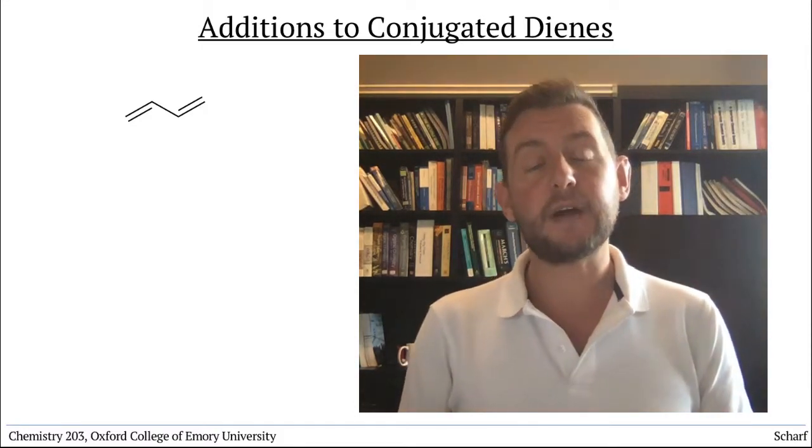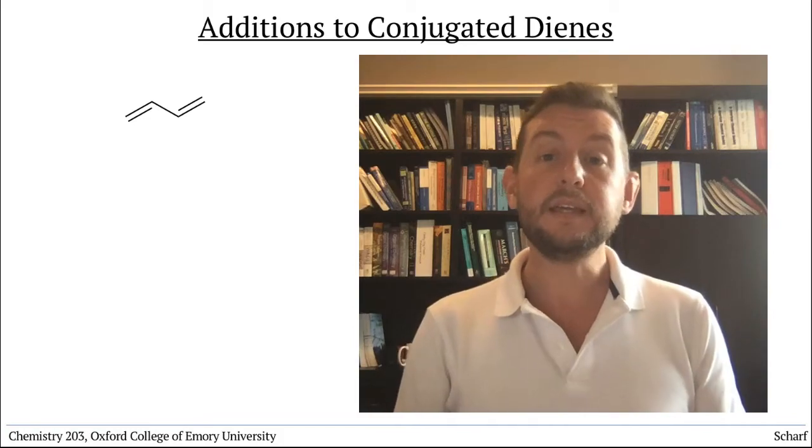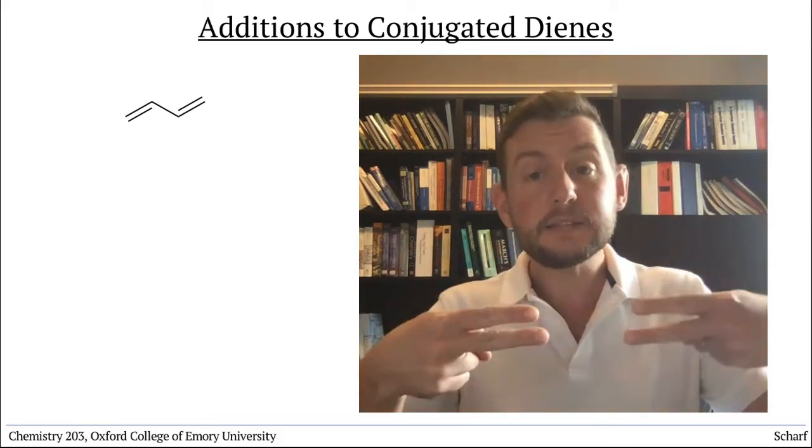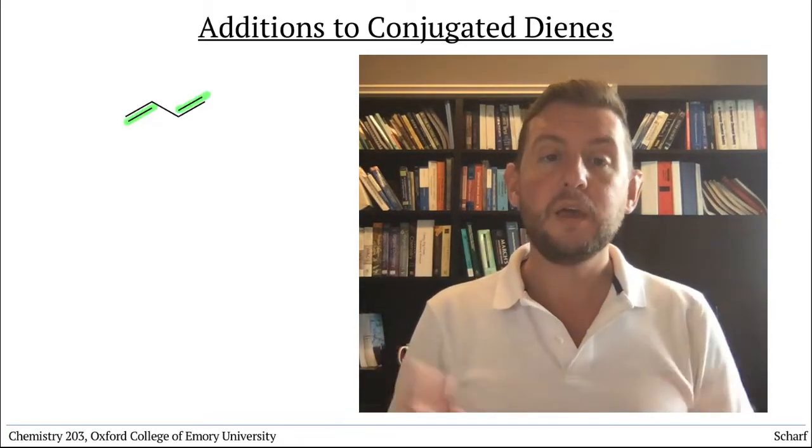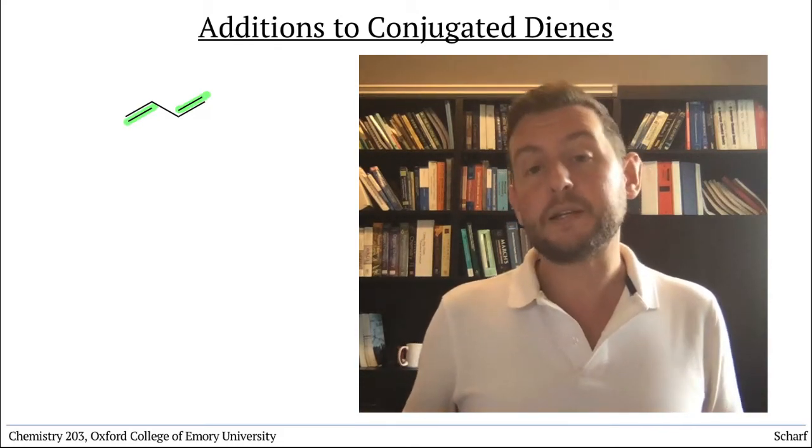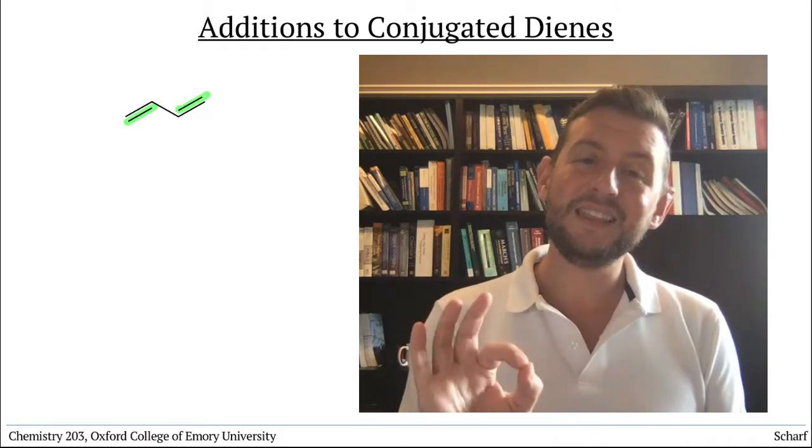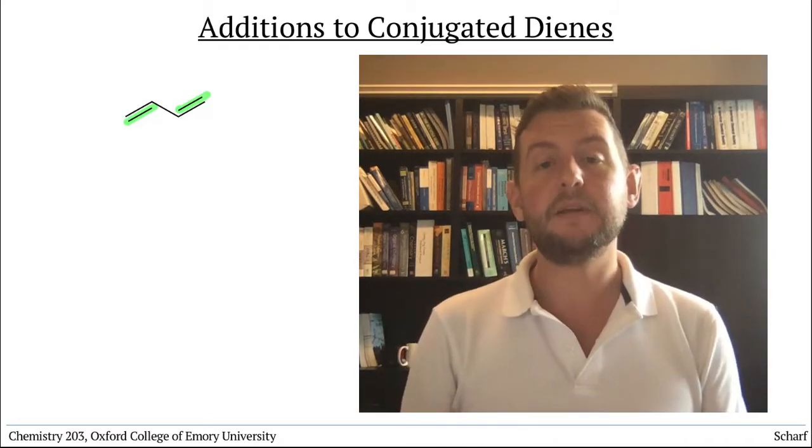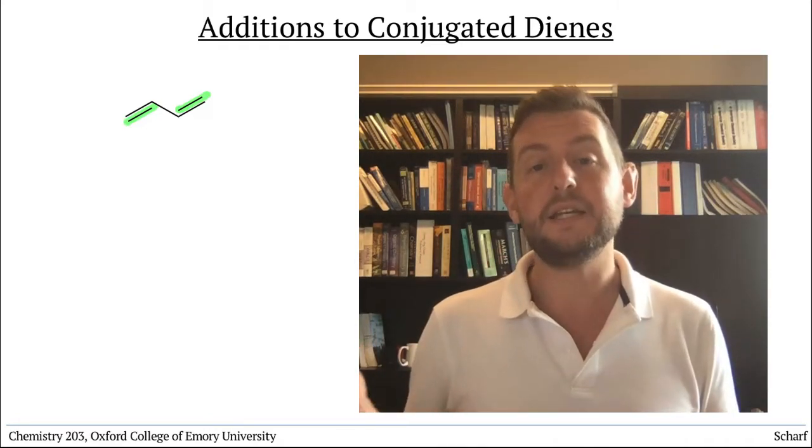Dienes are examples of conjugated systems. They contain two alkenes in conjugation. When they react with strong acids, they behave much like you'd expect alkenes to, but there's a little bit of added complexity because of the delocalized nature of the pi bonds.